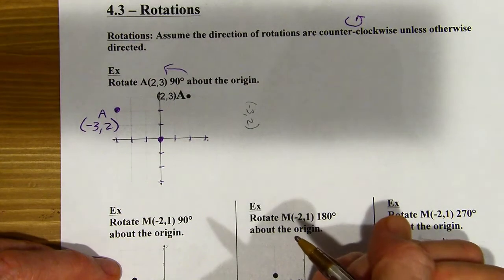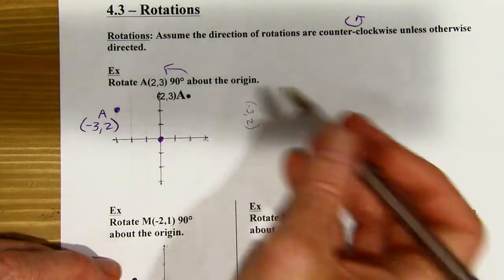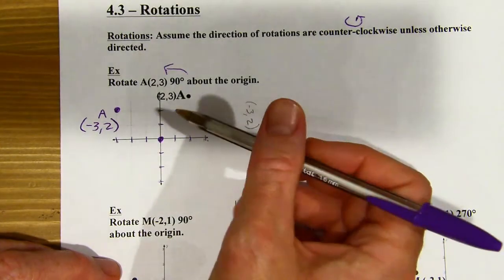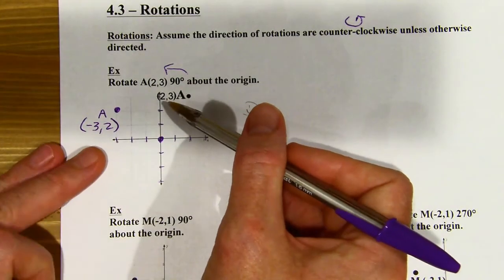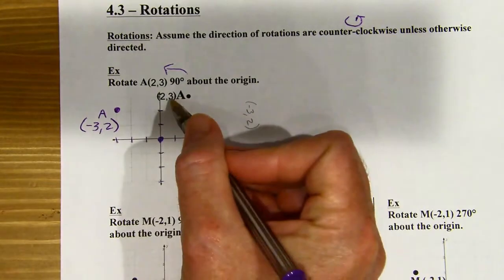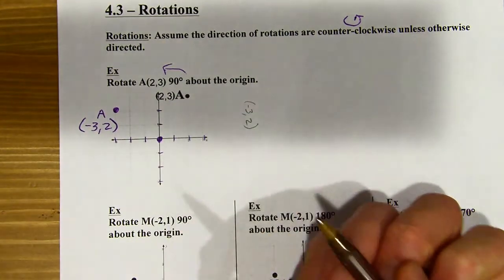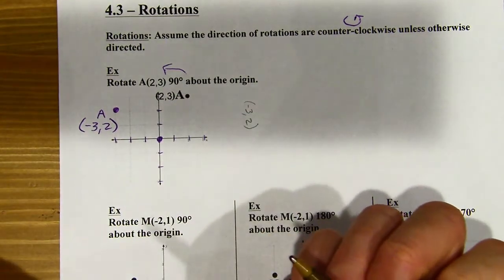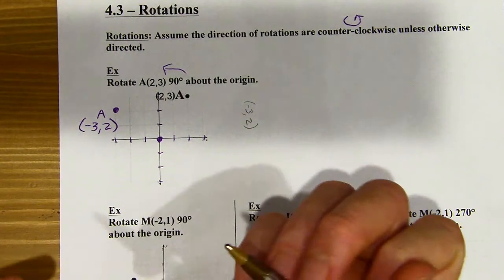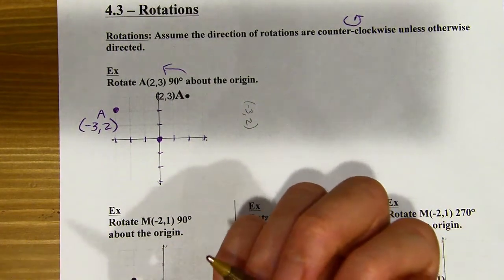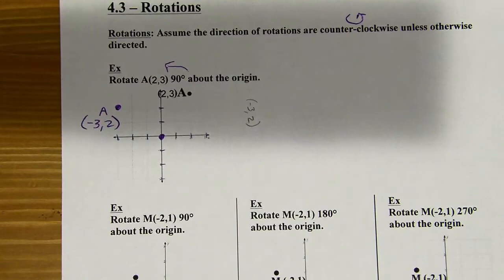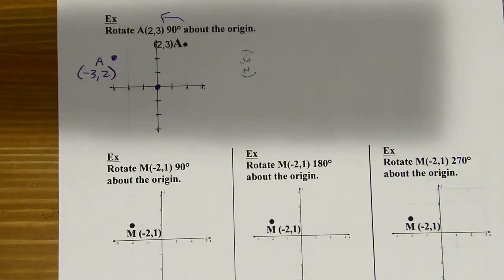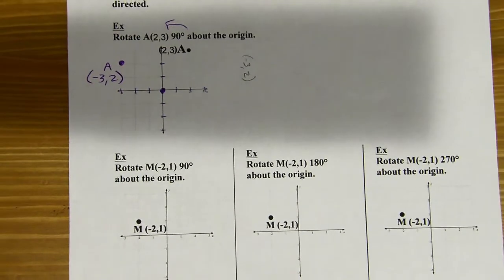There are also rules you can memorize — for a 90-degree turn, the x and y switch positions and your original y changes signs. But those are difficult to remember, so what I like to do instead is just turn the paper and see where it ends up. So there's my rotation 90 degrees about the origin. Now you guys try the next one: rotate point M 90 degrees about the origin.